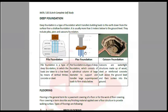Pier foundation consists of a cylindrical column of large diameter constructed deep into the ground to transfer the load. Caisson foundation uses watertight structures completely made of wood, steel, or reinforced concrete. The caisson is constructed above ground and then used to design the building foundation below.